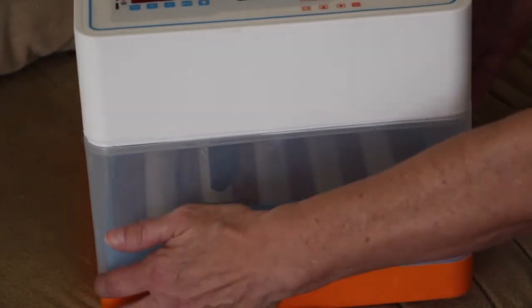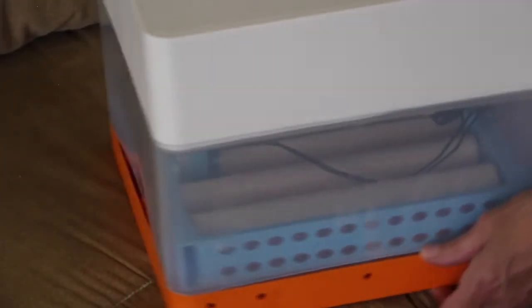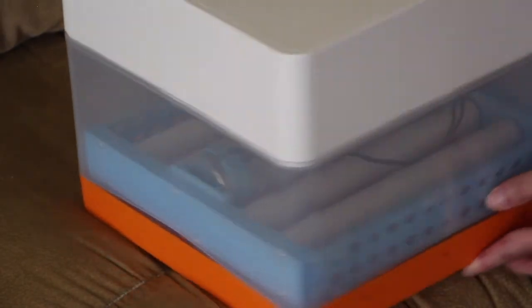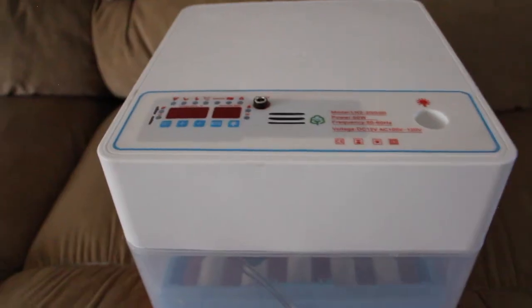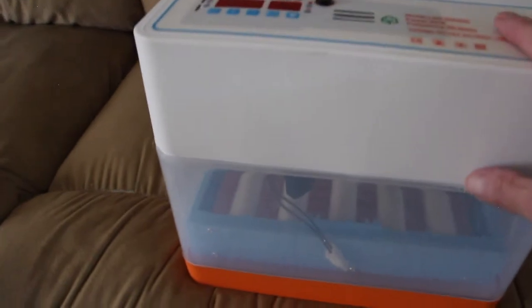You can see it's a 360 degree view. So no matter where you have it, you can see it. The maximum capacity of eggs you can place in here is 24. This Anbel egg incubator is easy to clean, easy to assemble.